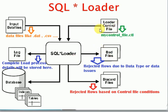Once you create and run the control file, it will generate three additional files. The first is the log file, which contains the complete end-to-end process: from where data was selected, where it was inserted, number of rows selected, number of rows inserted, number of rows with errors, number of rows rejected or discarded, CPU time, total database time taken, data file location, and discard file location — all information will be there in the log file.